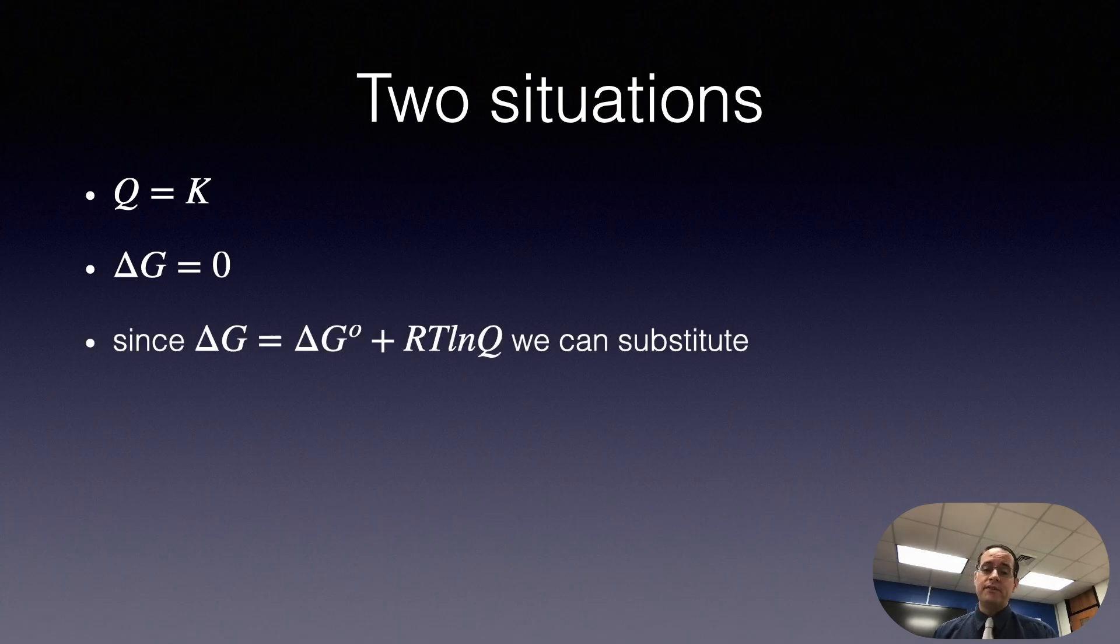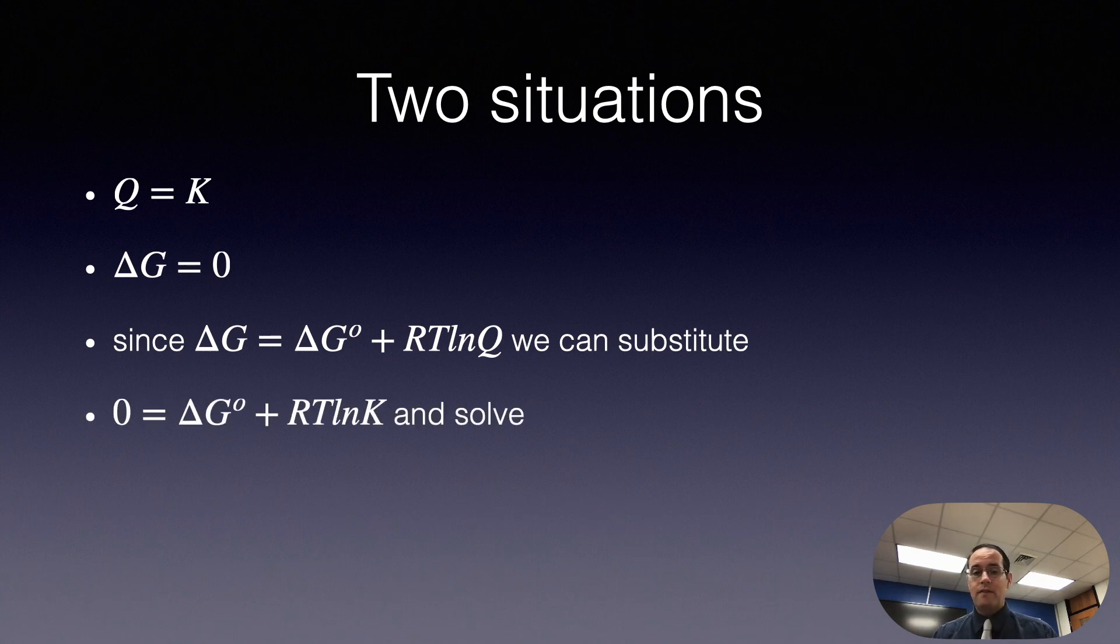Now, since we know previously the non-standard Gibbs free energy formula, we can substitute in where we see Q, we can put K, and where we see ΔG, we can place zero. And we get this new equation. And now we can solve for ΔG. ΔG° is equal to negative RT ln K. That's a very useful formula.